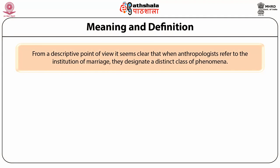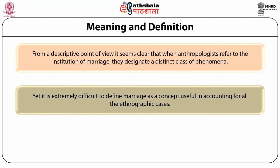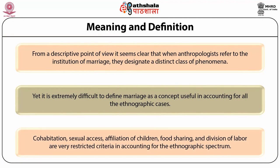From a descriptive point of view, it seems clear that when anthropologists refer to the institution of marriage, they designate a distinct class of phenomena. Yet it is extremely difficult to define marriage as a concept useful in accounting for all the ethnographic cases. Cohabitation, sexual access, affiliation of children, food sharing, and division of labor are very restricted criteria in accounting for the ethnographic spectrum.